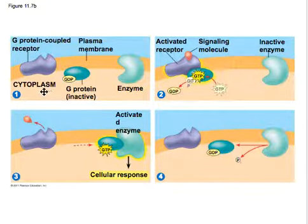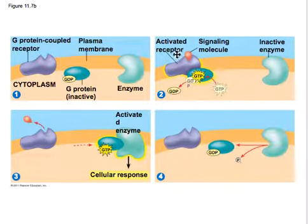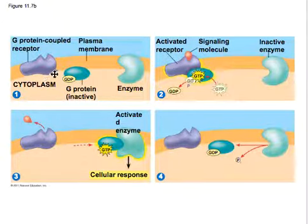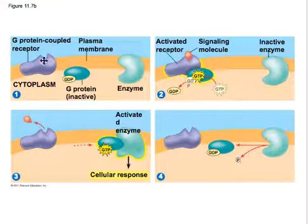We have this protein complex in the cell membrane. The ligand is going to come in and bond, and there's actually a G protein that's going to help transmit this signal over to an enzyme that does the cell response. So this is like a two-step cell membrane process. It's using guanosine triphosphate, and having the G protein help out is a big part of this process.